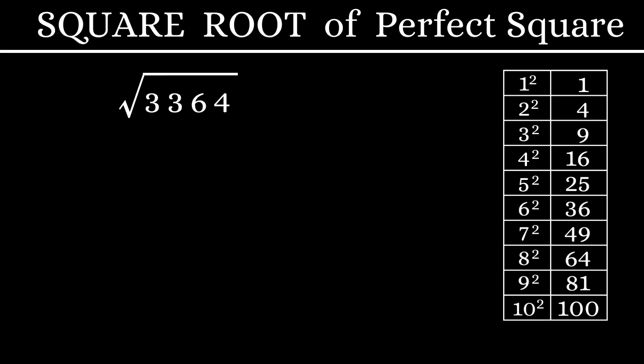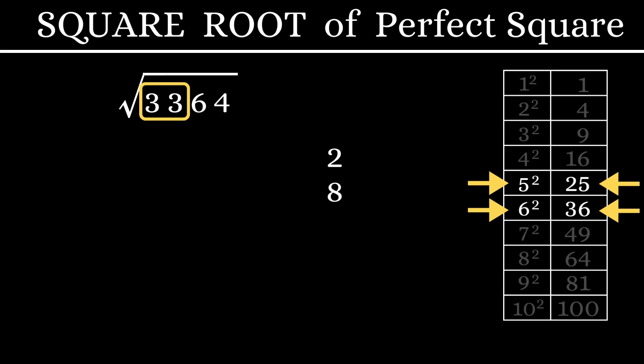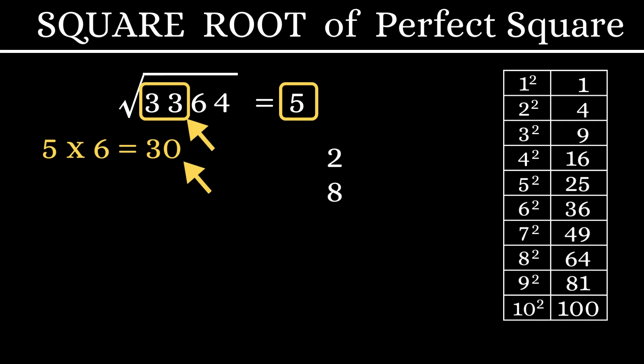Considering the last digit 4, you could either have 2 or 8. Then, considering 33, which falls between 5 squared and 6 squared, we have the tens digit as 5. And multiplying 5 with the next number 6, we get 30. 33 is larger than 30. That means the larger number is our answer, 58.